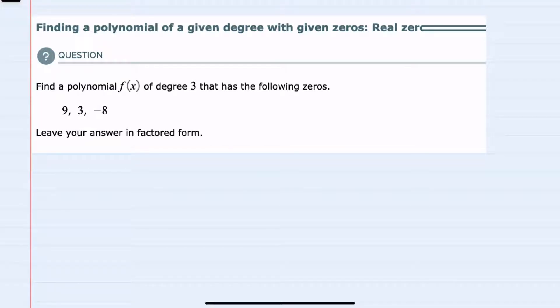In this video I'll be helping you with the Alex problem type called finding a polynomial of a given degree with given zeros, real zeros. We're asked to find the polynomial f of x which is a degree 3 that has the zeros of 9, 3, and negative 8.